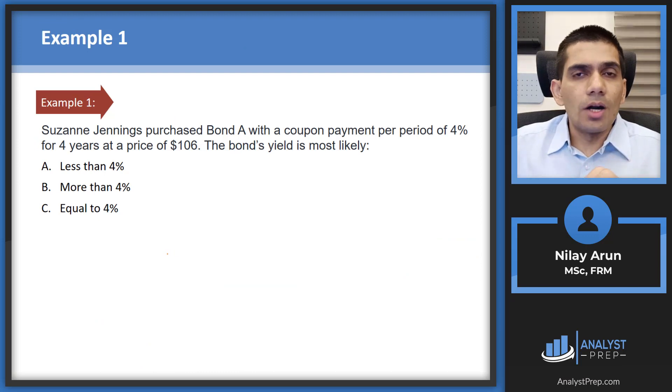Now let's look at a couple of examples to understand bond valuation. Jennings purchased bond A with a coupon payment per period of 4% for four years at a price of 106. The bond yield is most likely less than 4, more than 4 or equal to 4. Now let's say the price is 106. Typically your future value would be 100. So your par value would have been 100 which means that this bond is trading at a premium. Now when does a bond trade at a premium? The bond trades at a premium when it's giving you a higher return than what you require which means that the coupon should be more than Y.